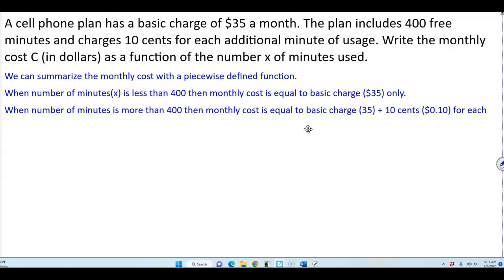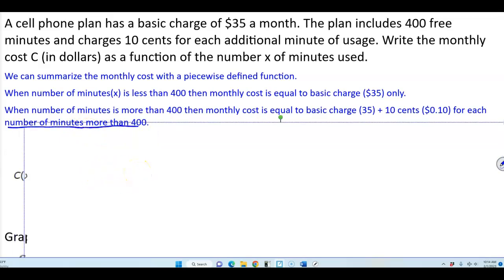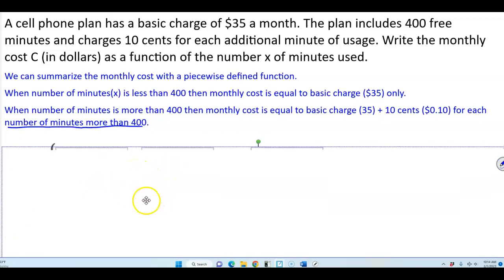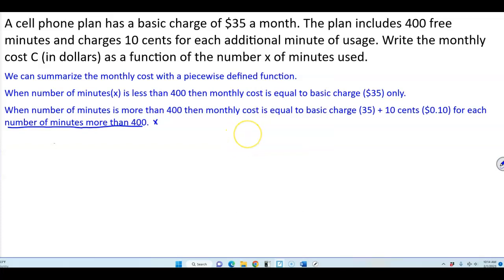When the number of minutes is more than 400, then the monthly cost is equal to the basic charge of $35 plus 10 cents for each number of minutes more than 400. The number of minutes more than 400 is represented by X minus 400.